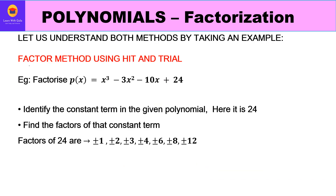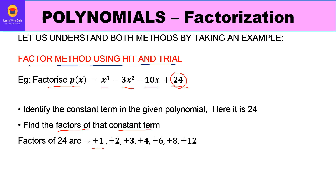The first method is the factor method using hit and trial. Our example is to factorize the polynomial p(x) = x³ - 3x² - 10x + 24. The constant term in this polynomial is 24, and the factors of 24 are ±1, ±2, ±3, ±4, ±6, ±8, ±12.